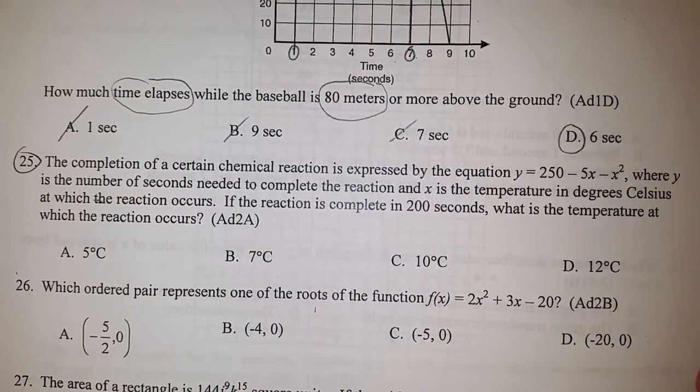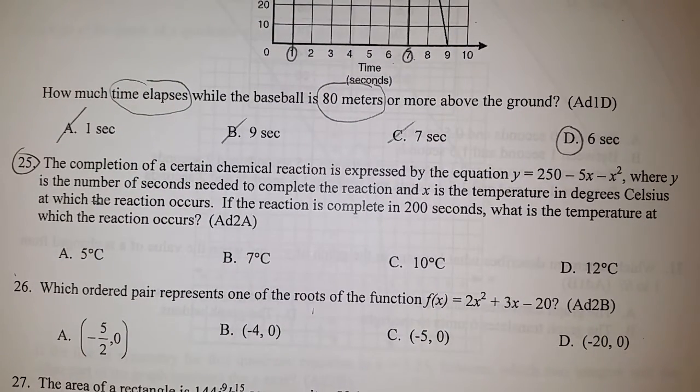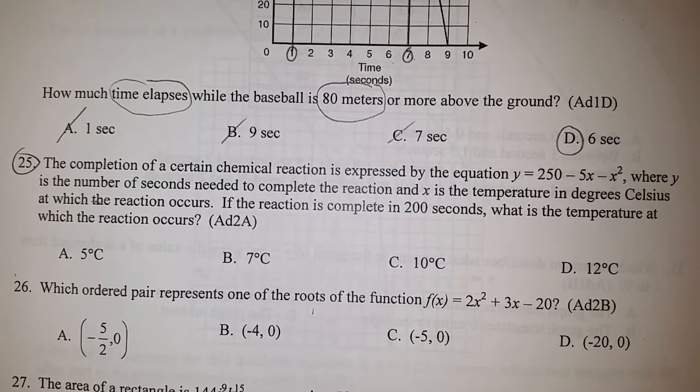Let's move on to number 25. The completion of a certain chemical reaction is expressed by the equation y = 250 - 5x - x², where y is the number of seconds needed to complete the reaction and x is the temperature in degrees Celsius at which the reaction occurs. If the reaction is complete in 200 seconds, what is the temperature at which the reaction occurs?